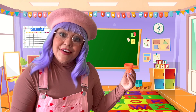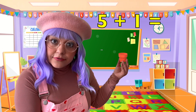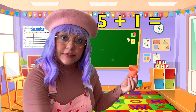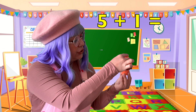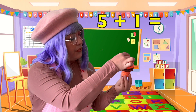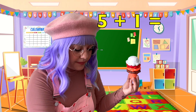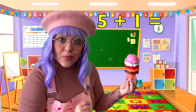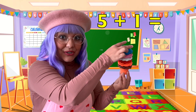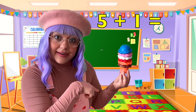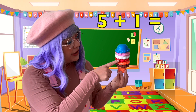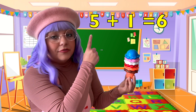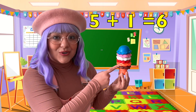Great job. Number 5: what's 5 plus 1? Let's count — let's add 5 scoops: 1, 2, 3, 4, 5. 5 scoops plus 1 more — let's add it. 1 more scoop. So let's count them all together. Ready? 1, 2, 3, 4, 5, 6. 6 scoops. 5 plus 1 equals 6.